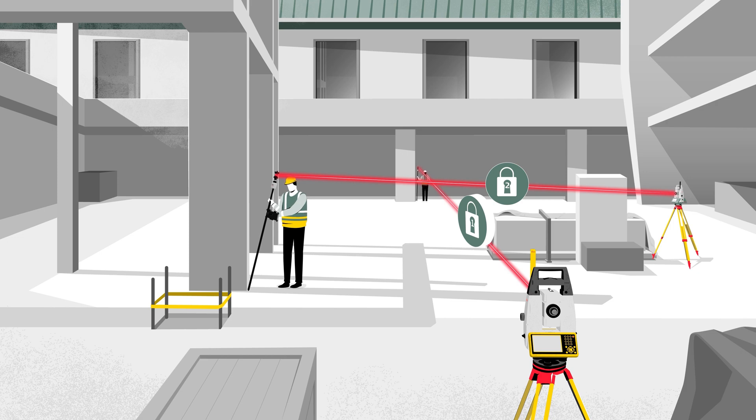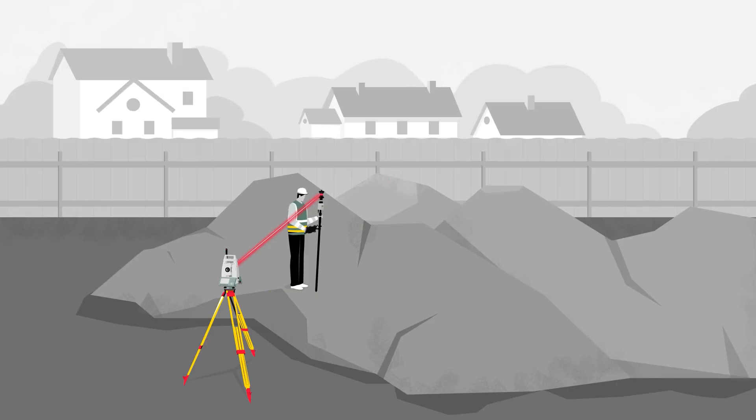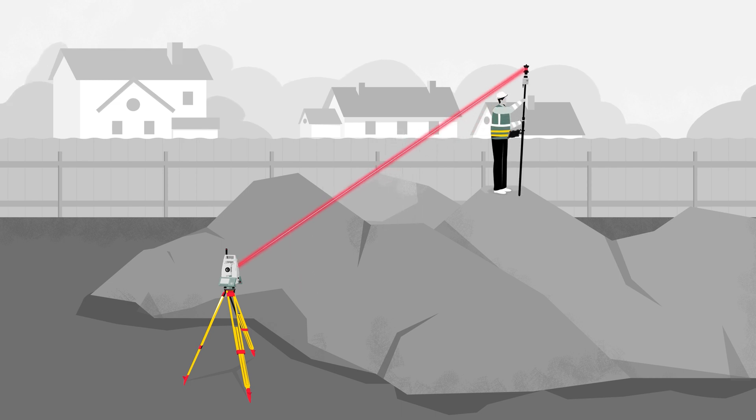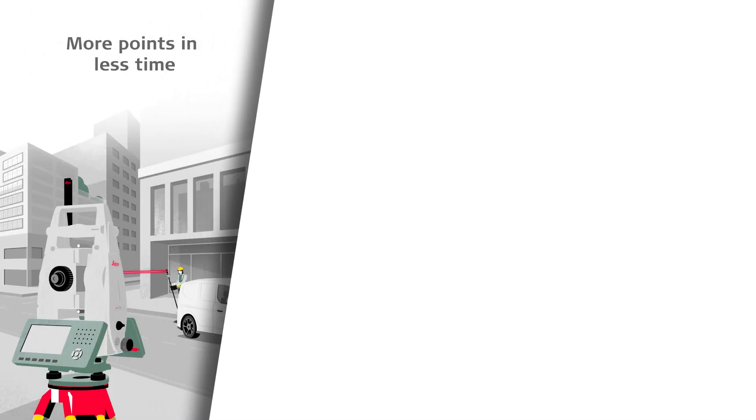Now you can fully focus on your task, as the AP20 automatically measures and applies height changes from the pole directly into the field software. No more time spent updating the height, no mistakes from points that have been recorded incorrectly, and no time-consuming post-processing anymore to change to the correct height.